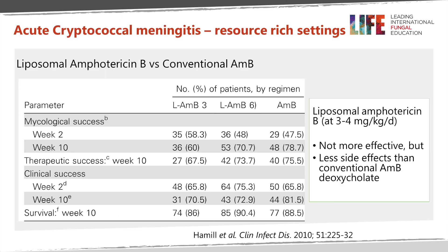Moving on to less resource-restricted settings: there is important data that liposomal amphotericin B is as effective as conventional amphotericin B but has fewer side effects. Because of this, in many centers in resource-rich settings in North America and Europe, liposomal amphotericin B has become the usual formulation for treatment of cryptococcal meningitis.